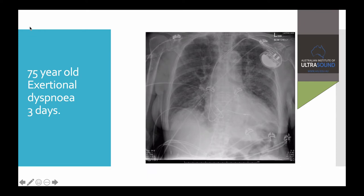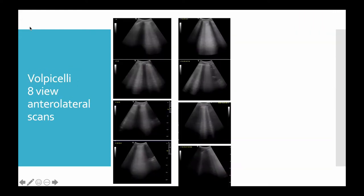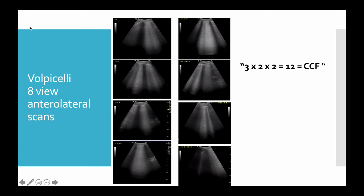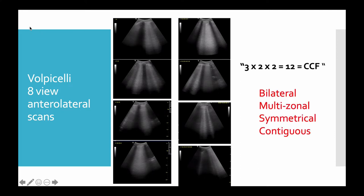In the ED we have a broader disease range or spectrum. Here's a 75-year-old with exertional dyspnea for three days — do you think this is pulmonary edema? If I pull out Volpicelli's 8-view protocol and get a picture with B-lines in all regions, I would say the chance of having acute pulmonary edema is pretty high. For a while we were trying to count the B-lines, saying that if you had more than three in more than two regions on both sides of the chest that would be CCF. Since then we've realized that different probes give slightly different looks to the B-lines, so we'd now say we'd be happy with a bilateral multi-zonal symmetrical contiguous change. And if you see that sort of thing, our decision becomes diuretics not nebulizers.